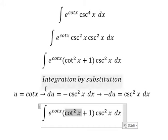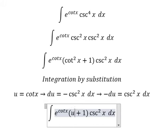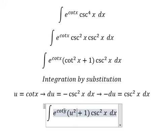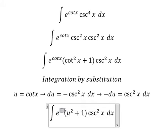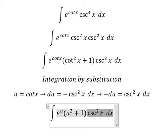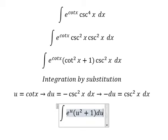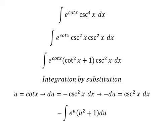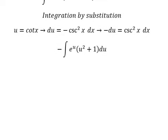Cot x, we change to u. Similarly for this one here. This one we change to negative du. Next, we need to use integration by parts.